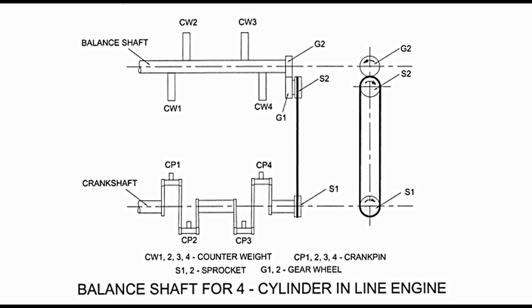As the two shafts rotate, these produce vibrations. Because their direction of rotation is opposite to each other, these vibrations are nullified. It is very important that the balance shaft is timed to the crankshaft, meaning that the throw and crank pin in the crankshaft and the counterweight in the balance shaft are opposite to each other. If the two are not timed, the vibrations produced by them would be added up, producing vibrations of added amplitude that will further imbalance the engine. Therefore, it is essential that both shafts are timed. Some engines have two balance shafts instead of one.